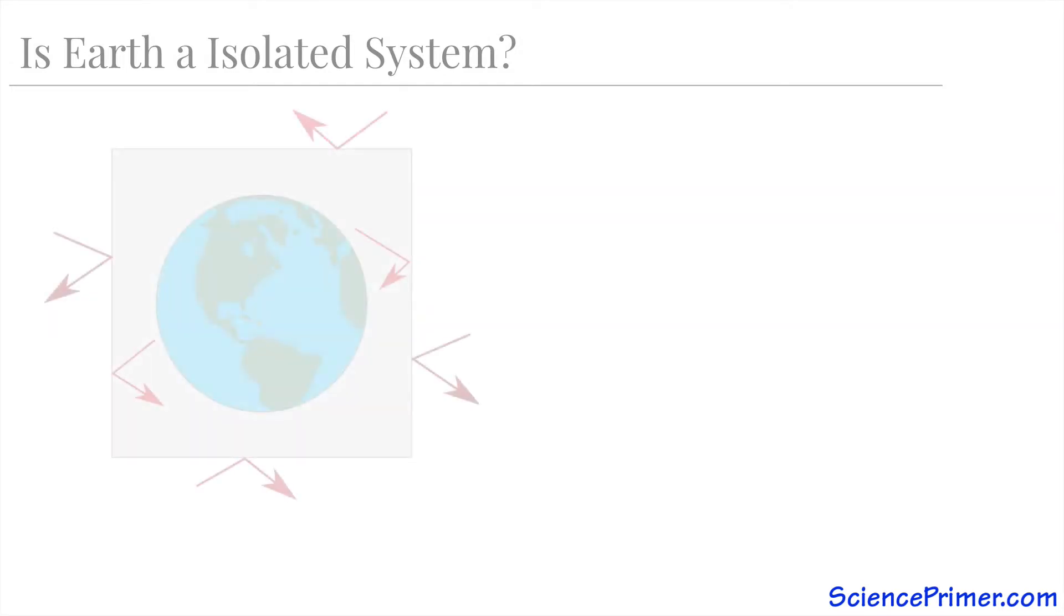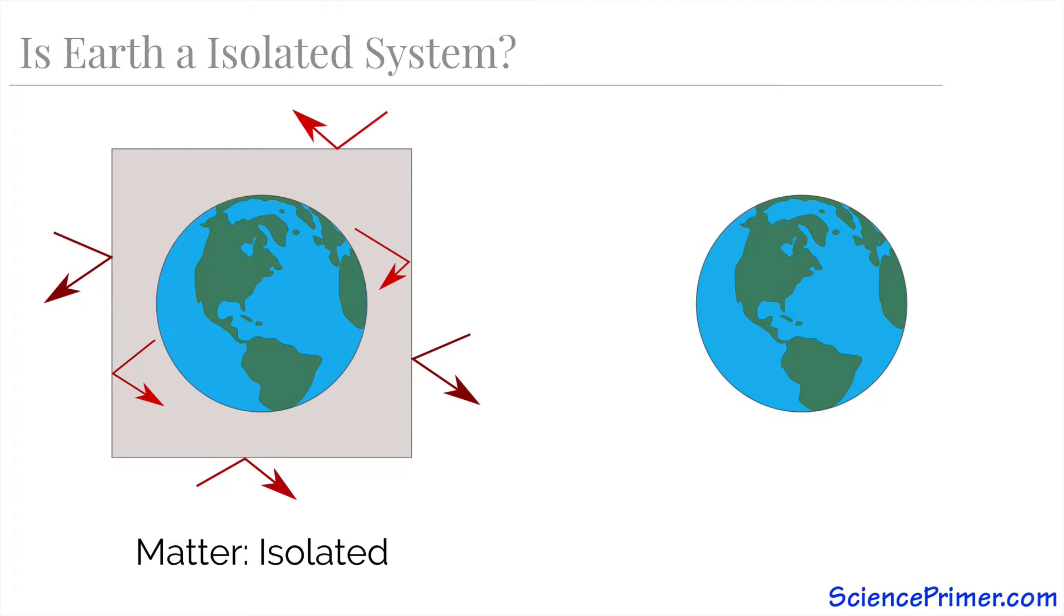So is Earth isolated or not? The answer differs depending upon what we're talking about. For matter, Earth is isolated. The system does not exchange much matter at all with the surrounding environment.